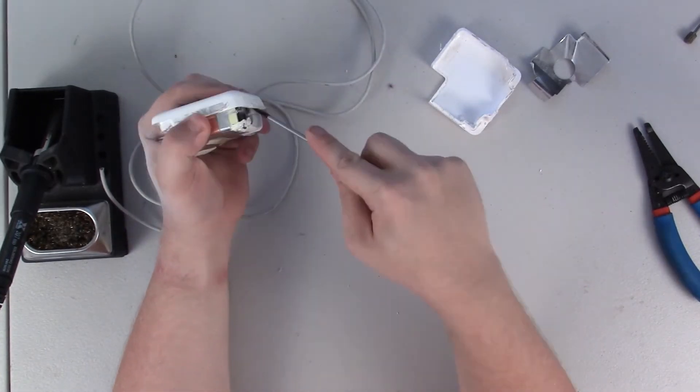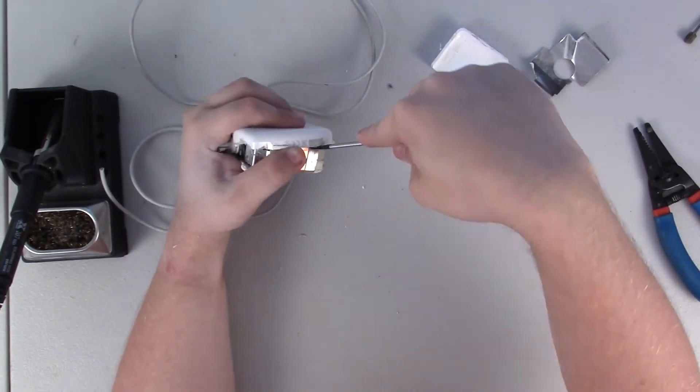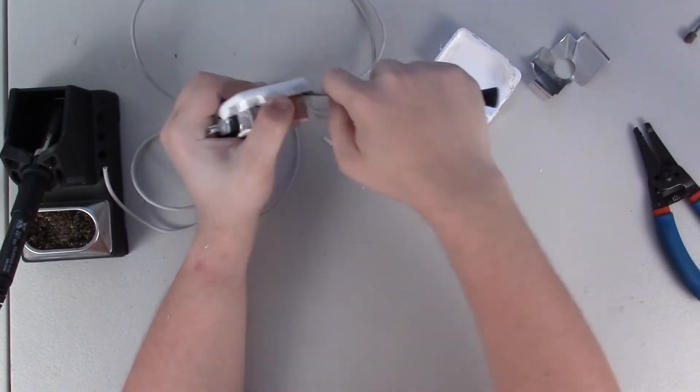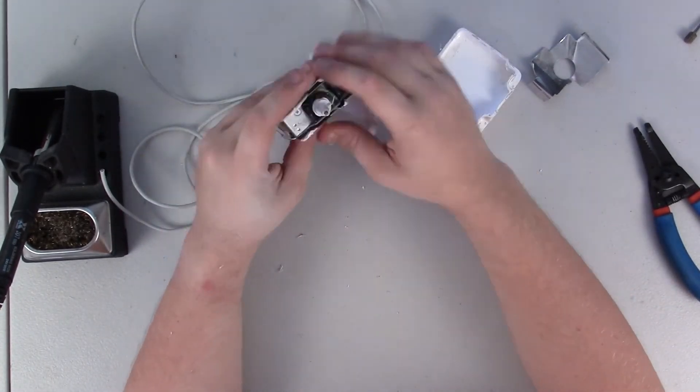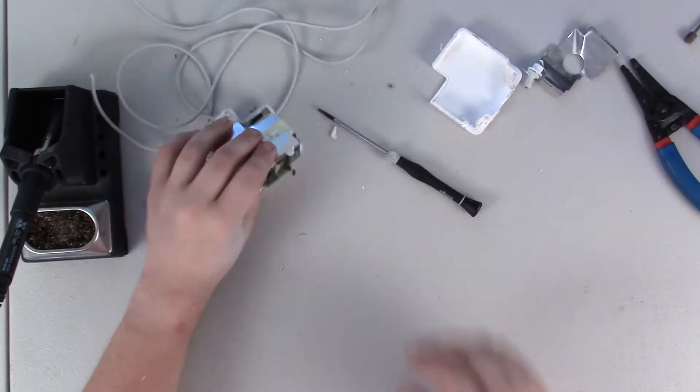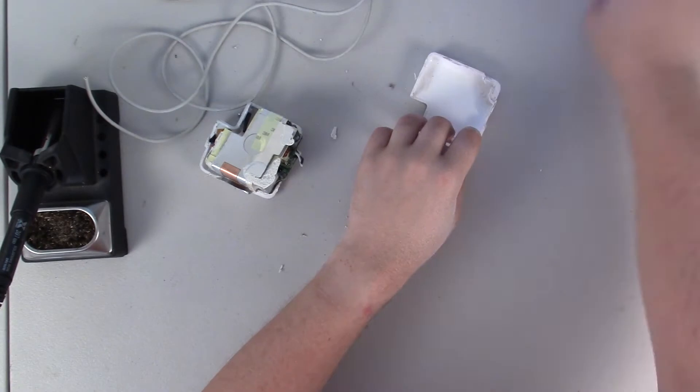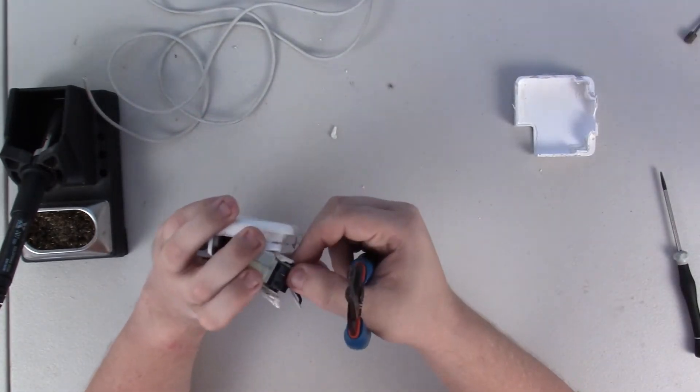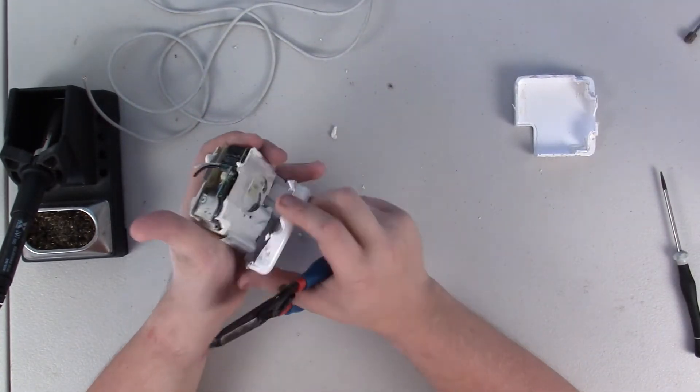You just want to expose the two black and white wires that actually go out to the charging cable. All you really need to do if you just want to replace your cable, which let's face it that's 90% of the problem, is you just strip those wires down a little bit.